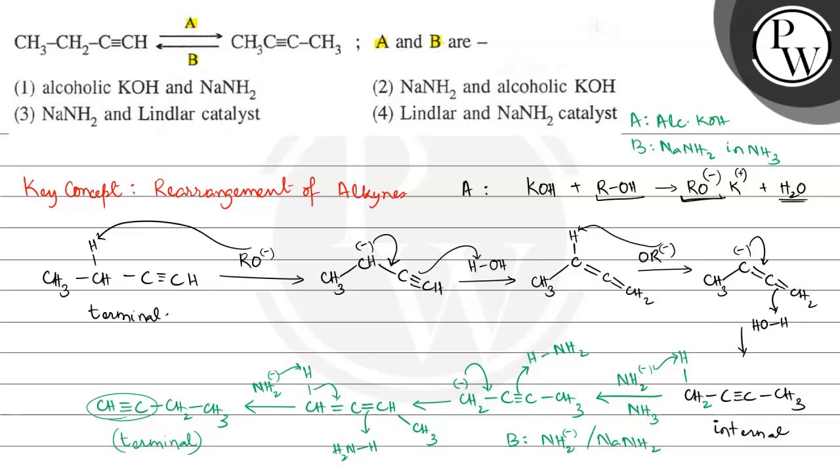So here the correct option is that is option number 1. A is alcoholic KOH and B is NaNH2. So option number 1 is the correct answer. This is the required solution and I hope you understood the concept well. Best of luck.